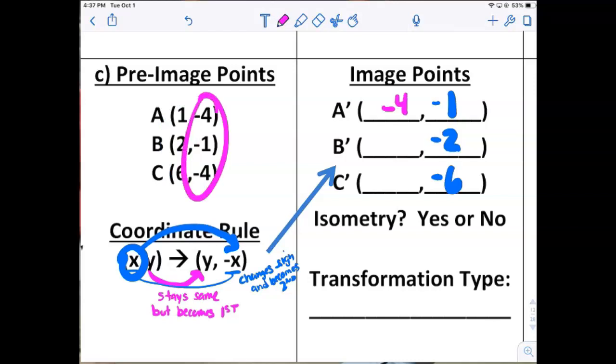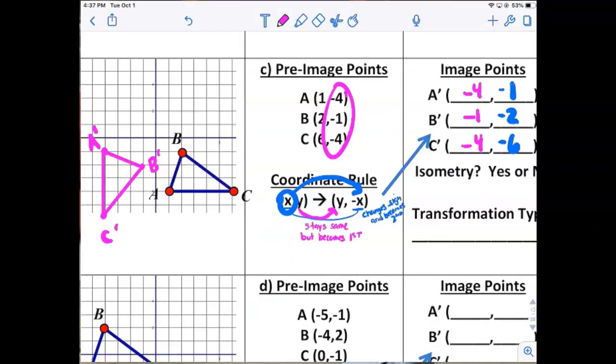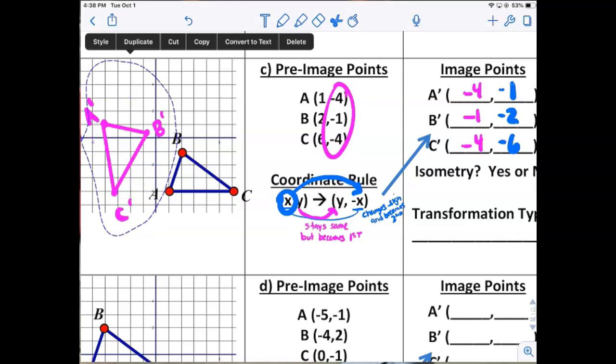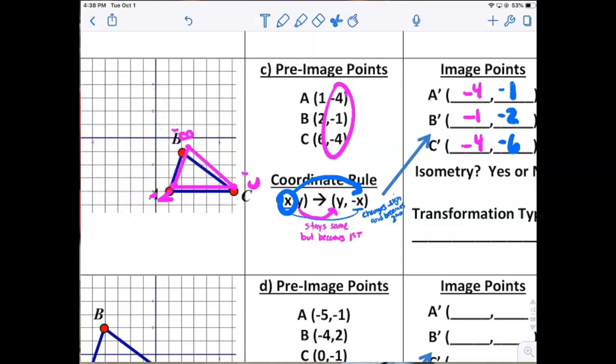So negative 4, negative 1, negative 4. Now I'll plot those and it ends up right over there in quadrant 3. And if you look at where it came from, it was just a rotation that spun around like that.